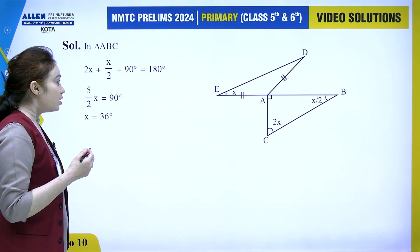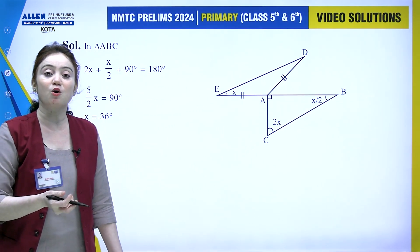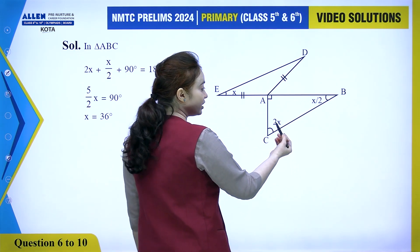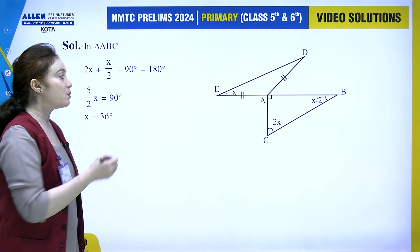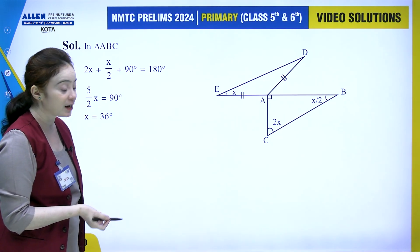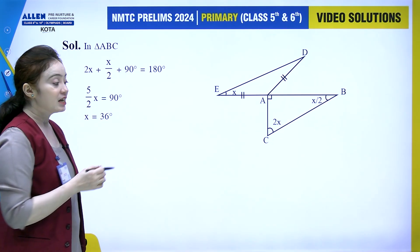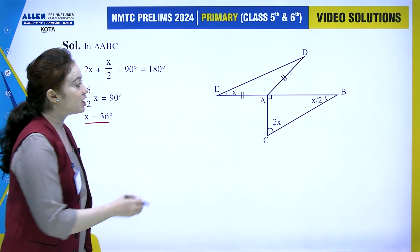In triangle ABC, we can easily apply the angle sum property because two angles are given in the form of x: 2x and x by 2, and a 90 degree angle is given. So we apply angle sum property: 2x plus x by 2 plus 90 degrees equals 180 degrees. Solving this, 5 by 2 of x equals 90, so x equals 36.